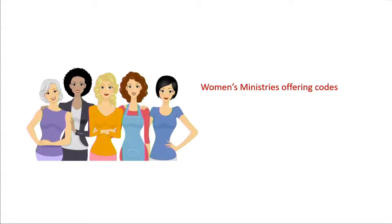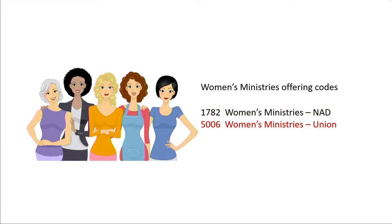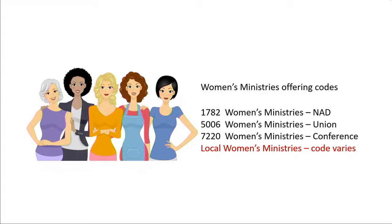Take Women's Ministries, for example. North American Division Women's Ministries has code 1782. There's a Union Women's Ministries code, 5006. Georgia Cumberland Conference Women's Ministries code is 7220. And most churches also have a local Women's Ministries fund with a code number somewhere between 8000 and 9999. So if a donor gives to the local Women's Ministries but their donation is instead mapped to 7220 or 1782 and disappears with the remittance check, you can see that is a problem.